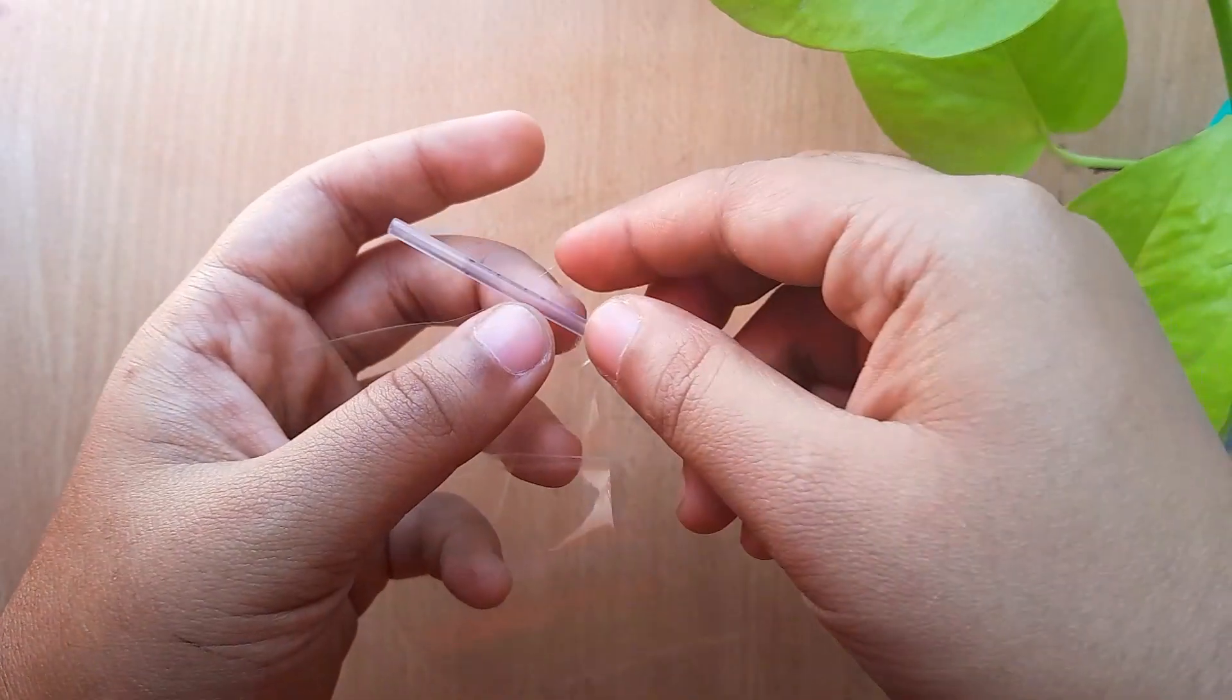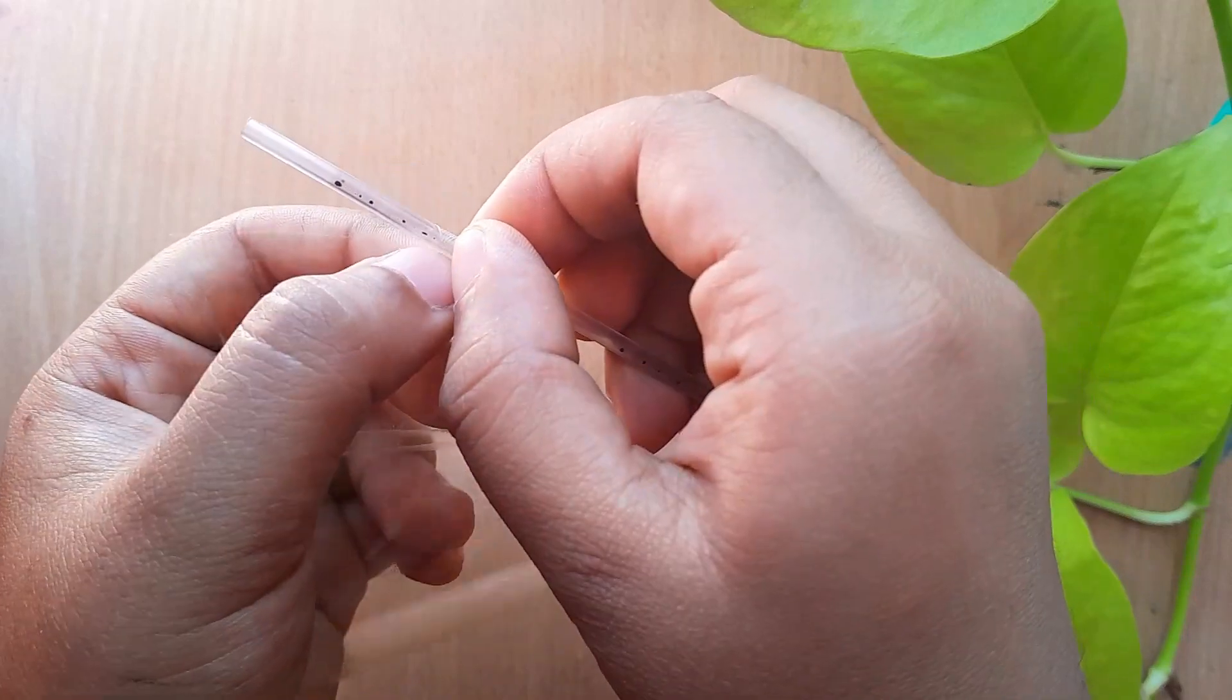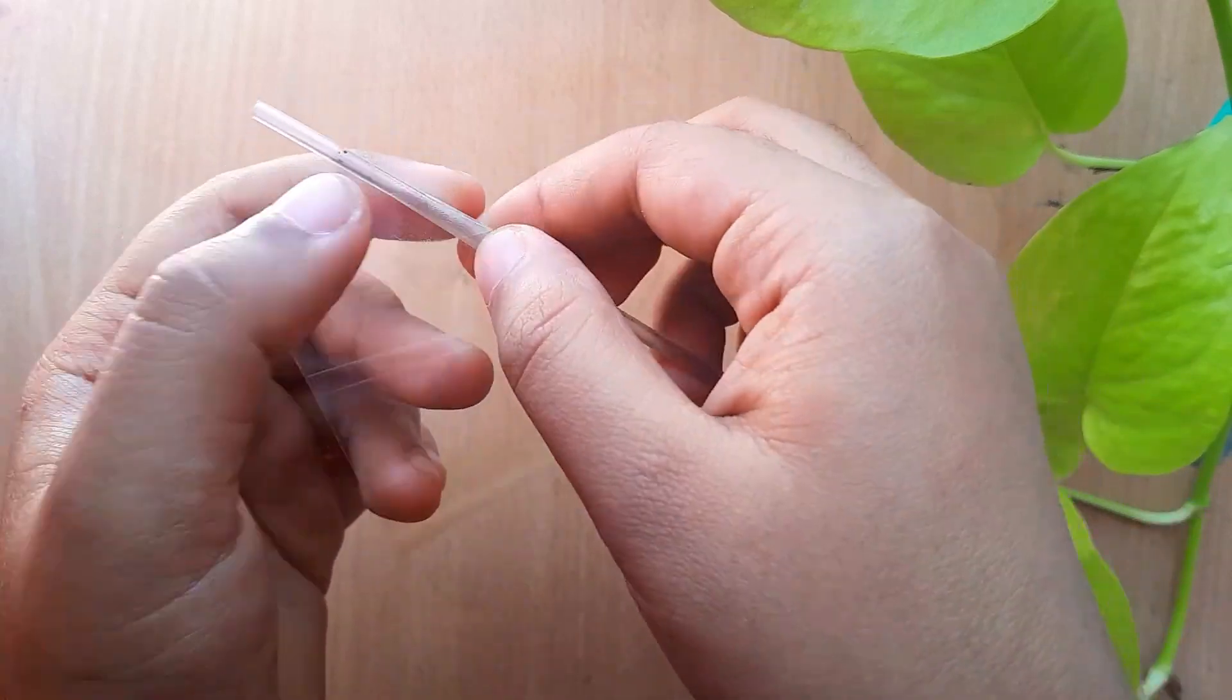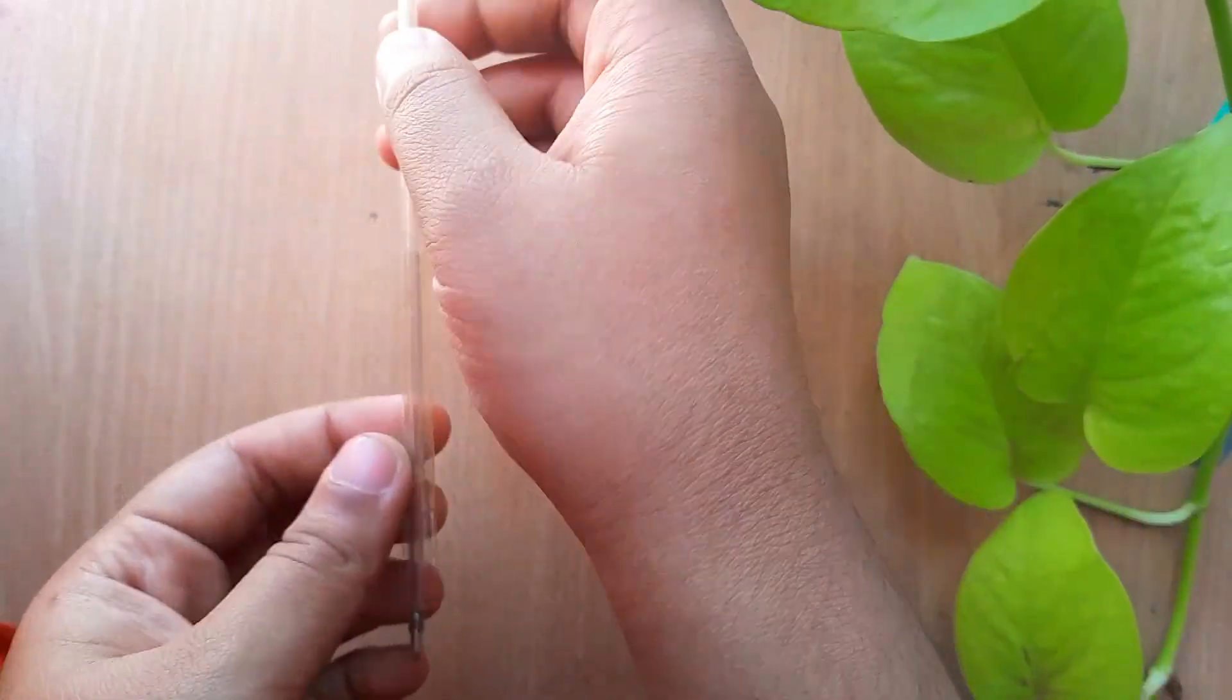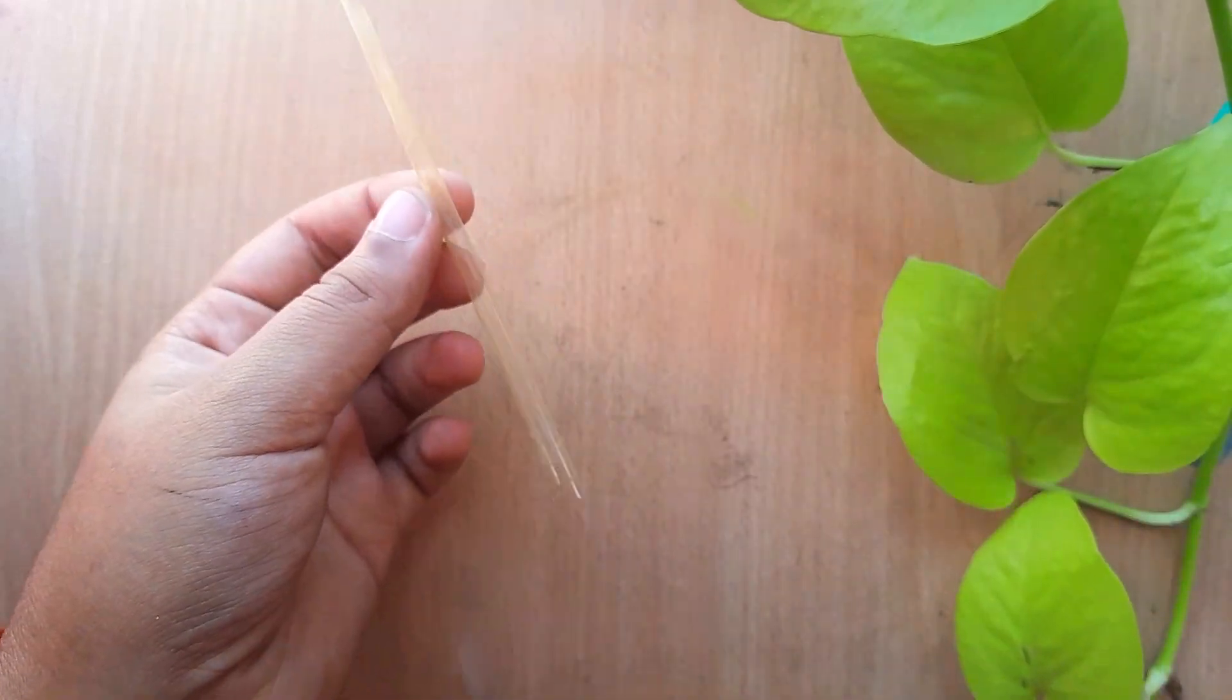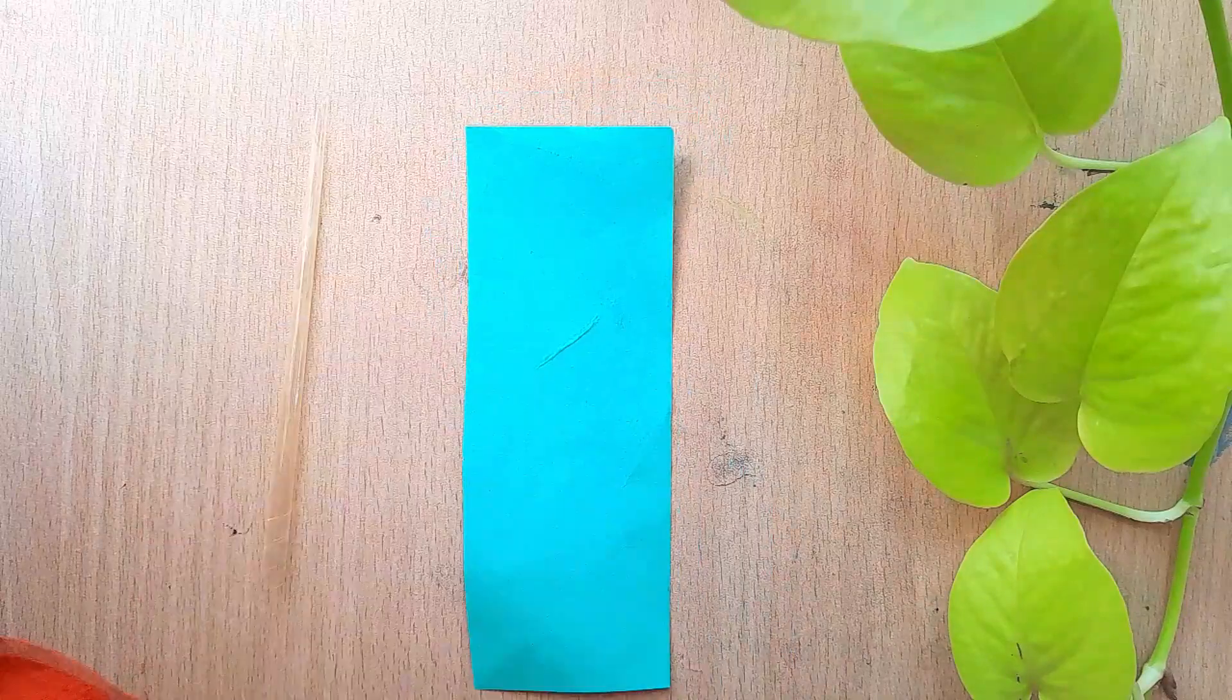Now let's roll it. Here I am using an empty pen strip to make the process easier. Now we have to tape a piece of paper.